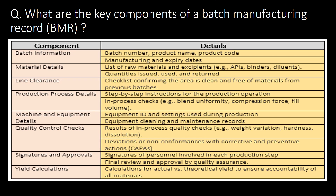What are the key components of a Batch Manufacturing Record (BMR)? Key components are batch information, which includes batch number, product name, product code, and manufacturing and expiry dates. Other key components are material details, line clearance, production process details, equipment or machine details, quality control checks, signatures and approvals, and yield calculations.